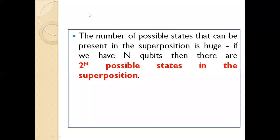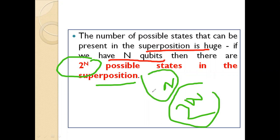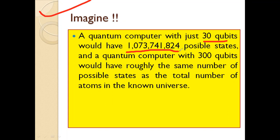The number of possible states in a superposition is very large. If you have n qubits, there are two to the power n possible states in the superposition. For example, a quantum computer with 30 qubits would have 1,073,741,824 possible states — that is simply two to the power 30.